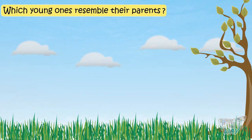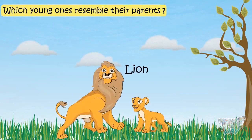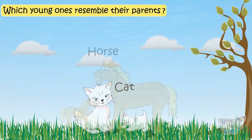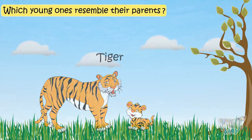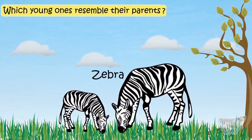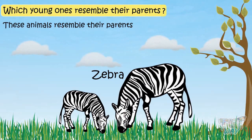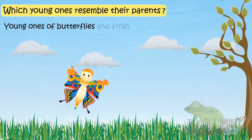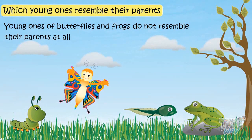Some young ones resemble their parents, while some young ones don't resemble their parents at all. Lions, cats, horses, tigers, elephants, monkeys, zebras, and many more animals have young ones that resemble their parents at the time of birth. However, young ones of butterflies and frogs do not resemble their parents at all at the time of their birth.